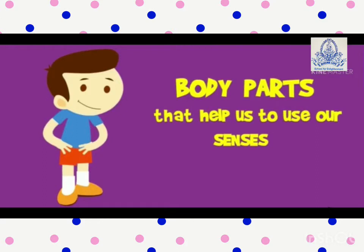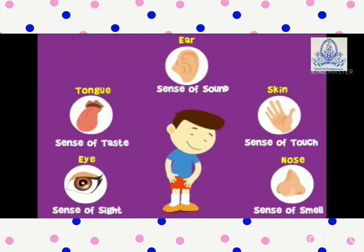Humaray pach khas ang hai. Which are they? First, eyes — sense of sight. Second, ear — sense of sound. Third, nose — sense of smell. Fourth, skin — sense of touch. Fifth, tongue — sense of taste.